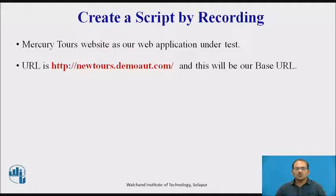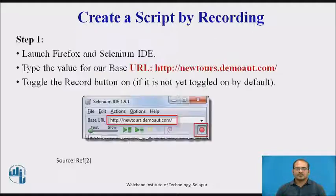We will use the MercuryTour website as our web application under test. It is an online flight reservation system that contains all the elements we need for this tutorial. Its URL is newtools.demo.com, and this will be our base URL in Selenium IDE. We will create our first test script using the most common method: recording and playback. Afterwards, we shall execute our script using the playback feature.